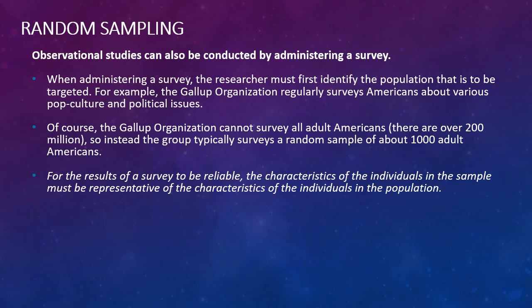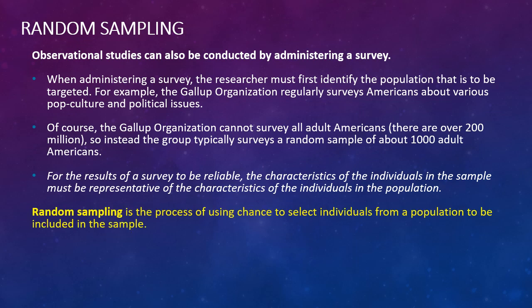For the results to be reliable, the characteristics of the individuals in the sample must be representative of the characteristics in the population. So we have to make sure that our sample isn't skewed one way or another. And that's the idea of what random sampling is. Random sampling is the process of using chance to select individuals from a population to be included in the sample.